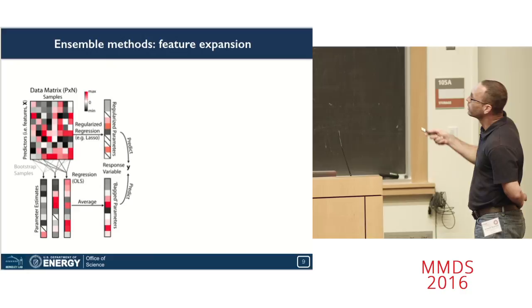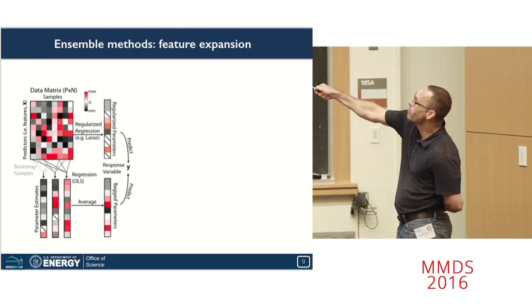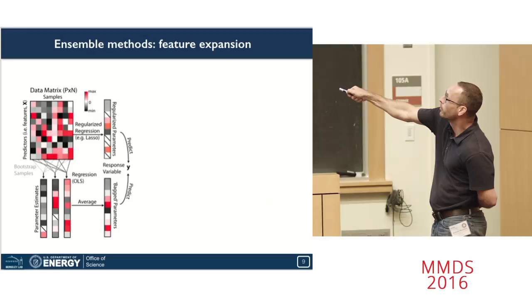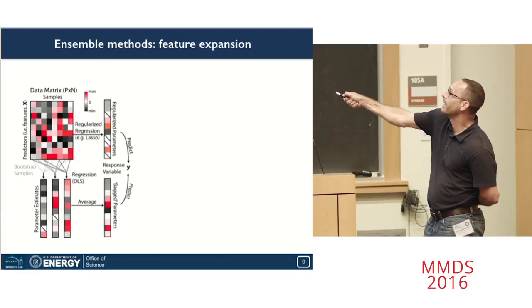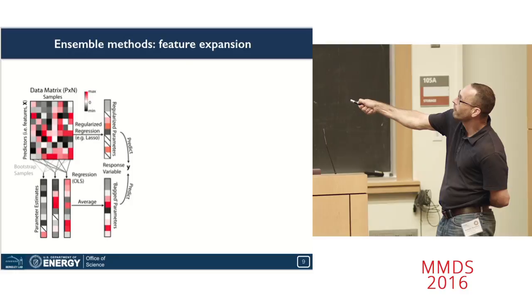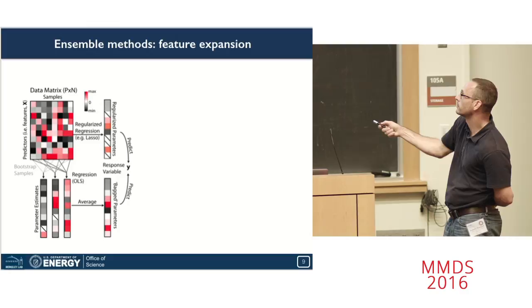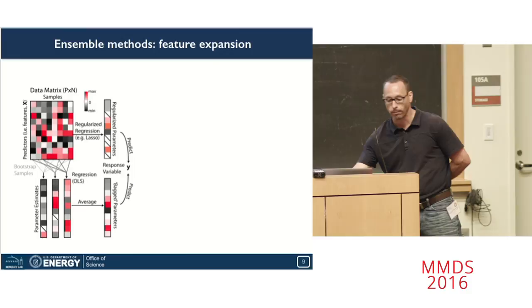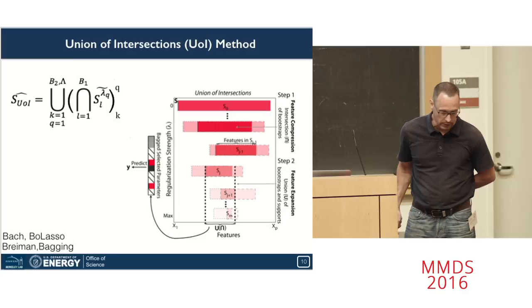At the opposite end of the spectrum, ensemble methods, such as bagging, essentially take a bunch of random subsamples of the data, estimate different values, or take different estimates of your parameter values, and then combine them through averaging. Because even if a single member of the ensemble has some amount of sparsity, the probability that all members of that ensemble also have that same sparsity is very low. So when you average, you actually lose feature expansion relative to the individual components. So what we hypothesize is that a method that combines both of these types of approaches would actually give better results than either one individually. And that's essentially what we did.